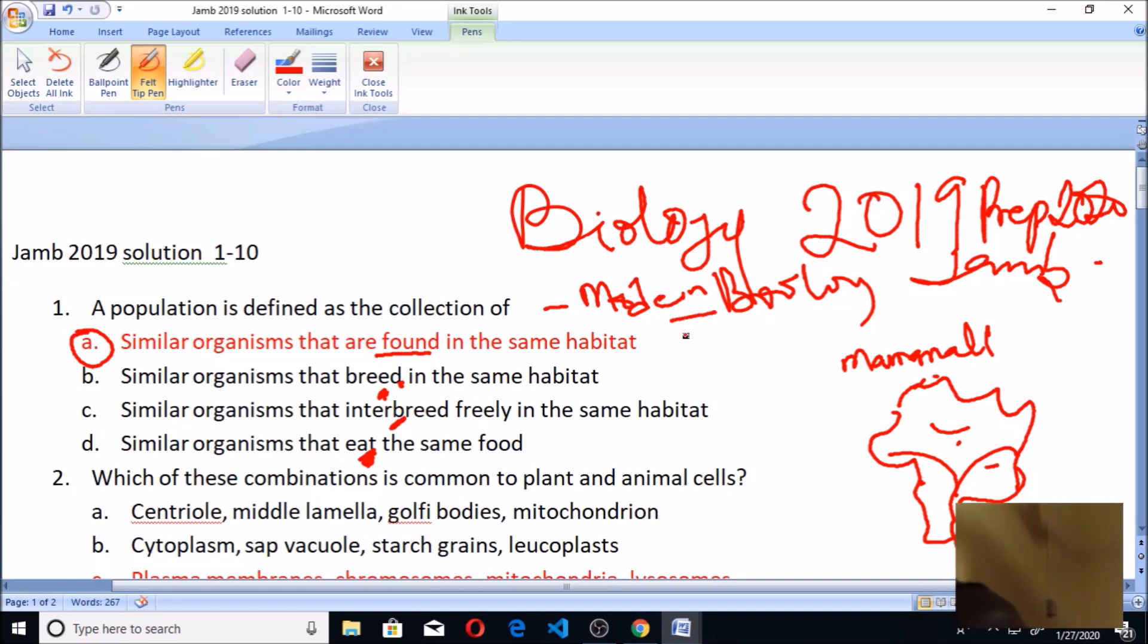Let's take a look at number two question: which of these combinations is common to plants and animals? If you look at plant cells and organization of life where you have cells, tissues, and organs as well as system, you know there are three major or four major organizations of life. We talk about cell as the smallest, then after cell you talk about tissue, then after tissue talk about organ, then after organs you talk about systems.